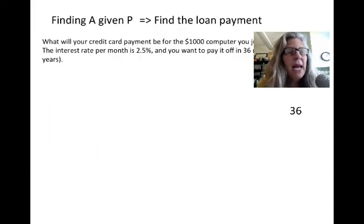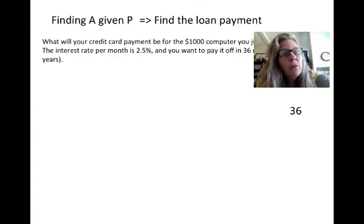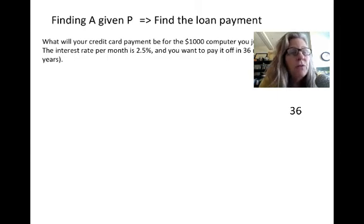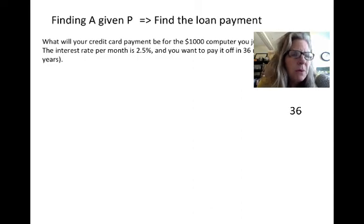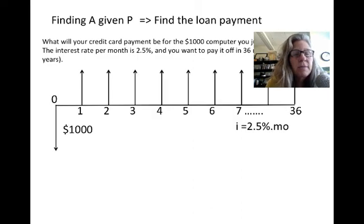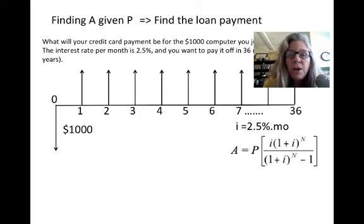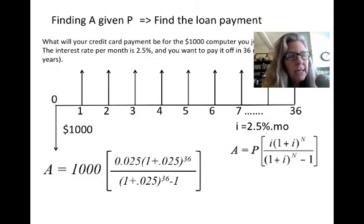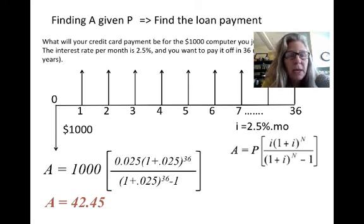The last uniform payment example is finding A given P — very common for determining a loan payment. What will your credit card payment be for a $1,000 computer at 2.5% per month over 36 months? Using the A given P equation and plugging in those values, you get about $42 per month — so for $1,000 over 3 years, you'll be paying around $42–$43 a month.